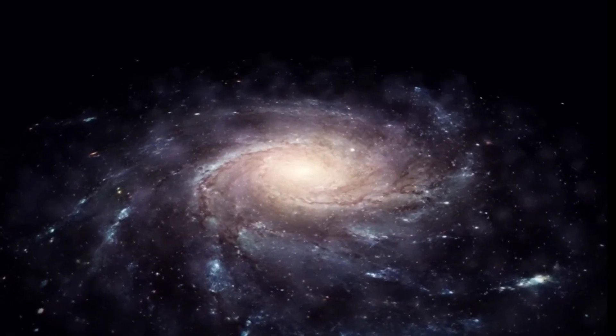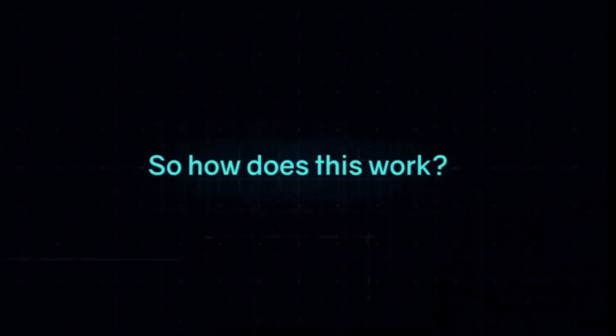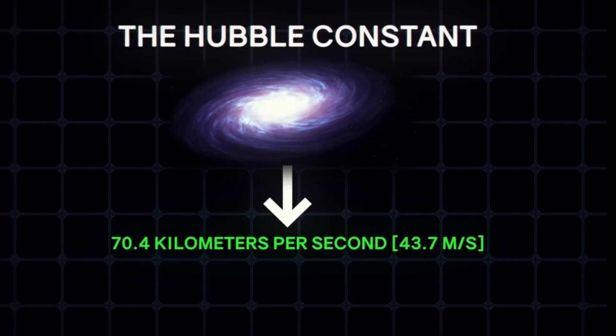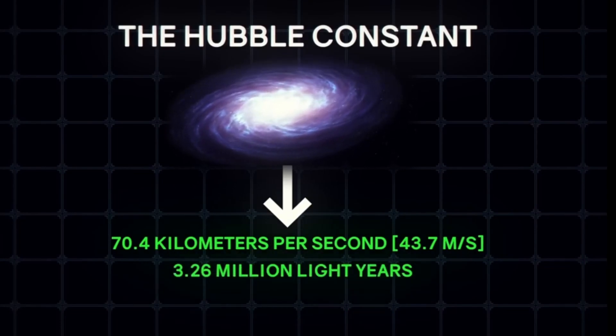The farther away from the observer, the faster galaxies move away from them. So how does this work? According to Edwin Hubble's calculation, called the Hubble Constant, galaxies recede away from each other at the speed of 70.4 kilometers per second per megaparsec, or 3.26 million light years.